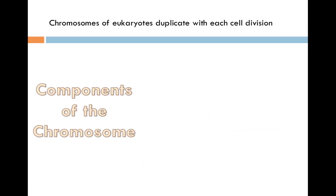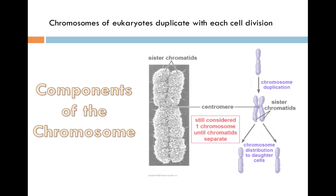Chromosomes of eukaryotes duplicate with each cell division. Most of the time, chromosomes exist as a diffuse mass of long thin fibers. This material is called chromatin, which is a combination of DNA and protein molecules. The DNA molecule of each chromosome is copied and new protein molecules attach as needed. The result is that each chromosome now consists of two copies called sister chromatids, which contain identical copies of the DNA molecule. The two chromatids are joined together especially tightly at a narrow waist called the centromere.